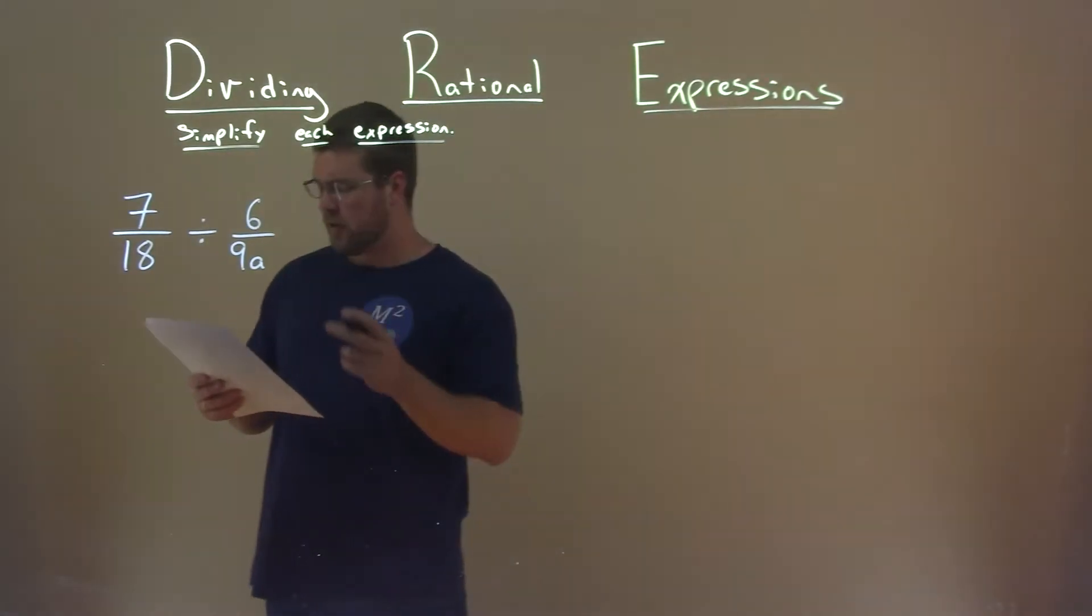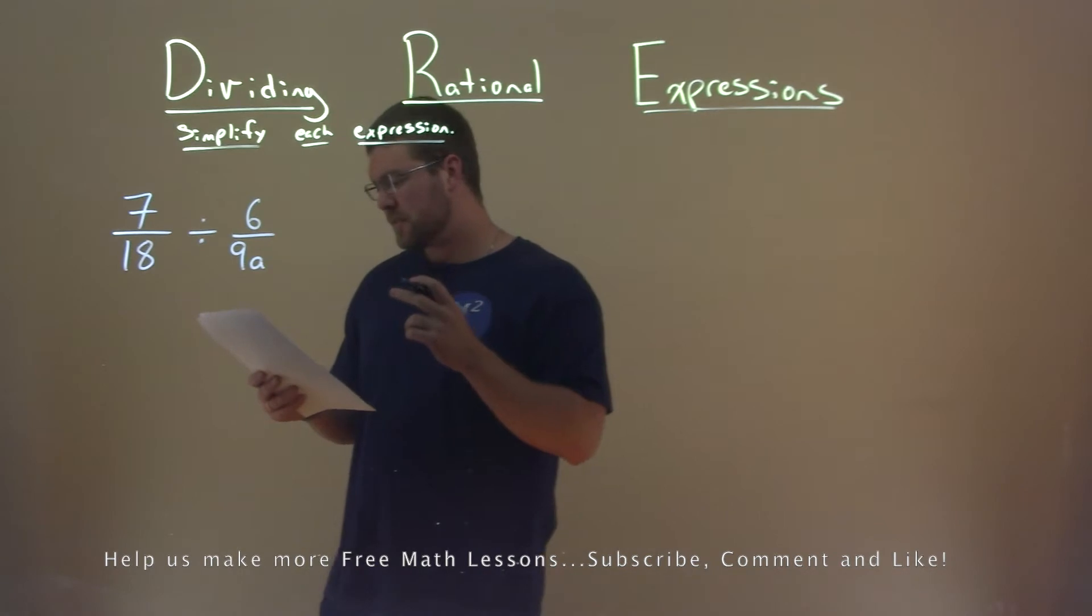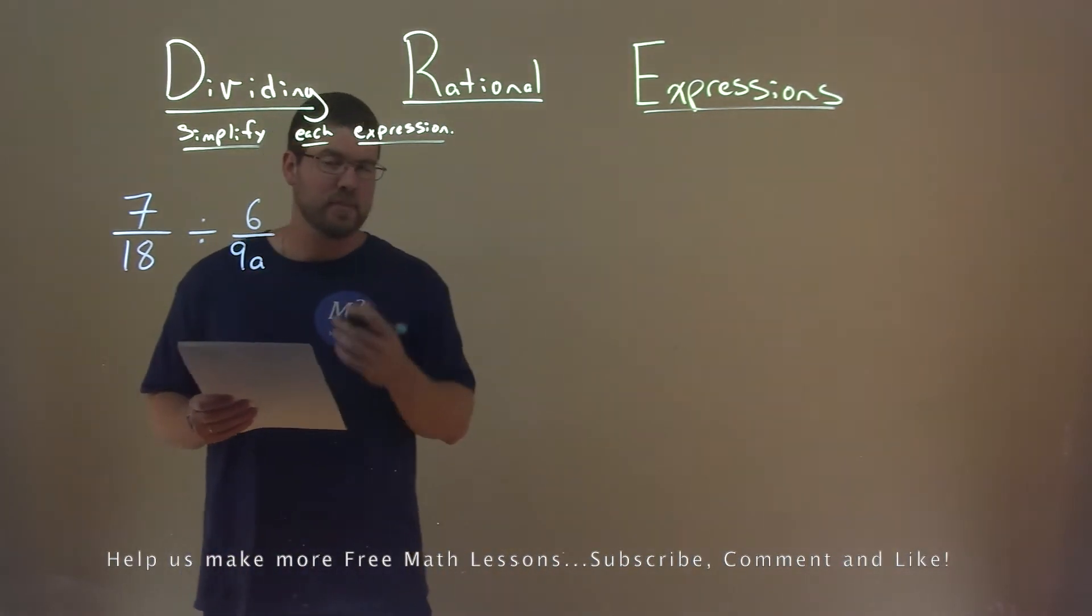We're given this problem right here, 7 over 18 divided by 6 over 9a, and we need to simplify this expression.